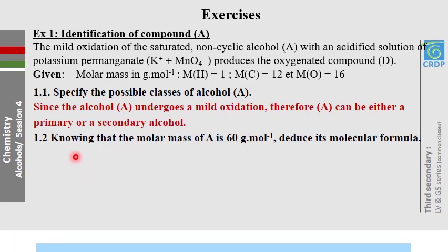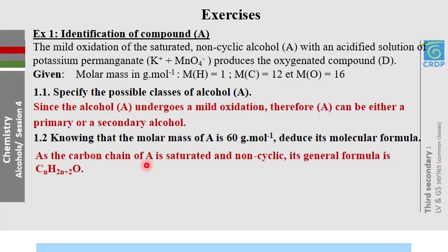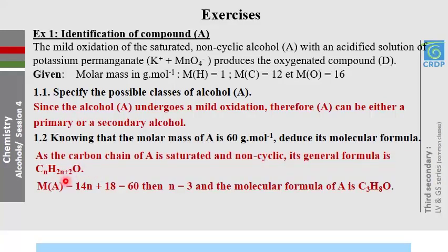Part 1.2: knowing that the molar mass of alcohol A is 60 g/mol, deduce its molecular formula. Alcohols have the general molecular formula CₙH₂ₙ₊₂O, so the molar mass in terms of n is 12n + (2n+2) + 16, which equals 60. Solving gives n = 3, so the molecular formula is determined.